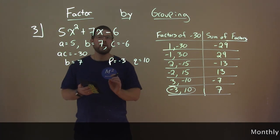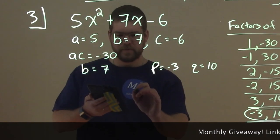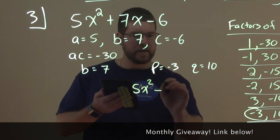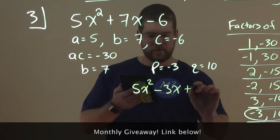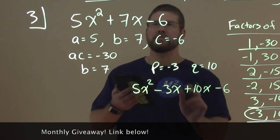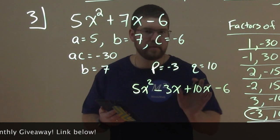So, now we want to rewrite this initial expression as such. We have 5x² minus 3x, that p-value, plus 10x, then we subtract the 6. Notice that this basically helped us set up our factoring here.